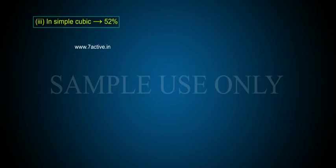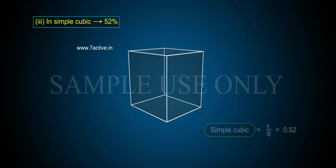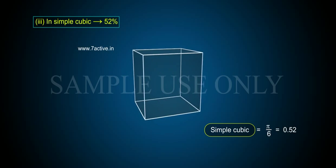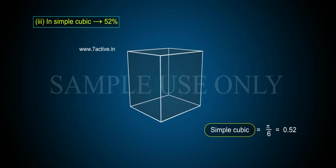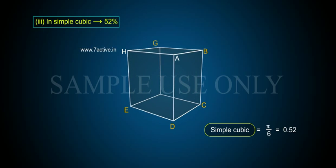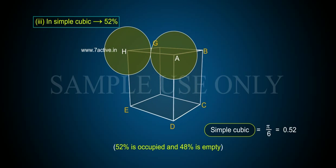In simple cubic, the packing efficiency is 52%. Simple cubic = π / 6 = 0.52. So 52% is occupied and 48% is empty. See you next week!